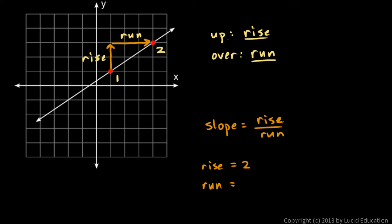And the run in this case is 3. So the slope is equal to 2 over 3, or 2 thirds. So this line has a slope of 2 thirds.